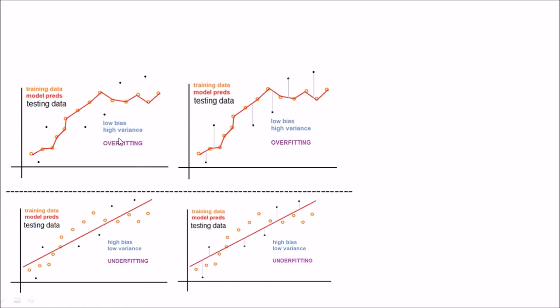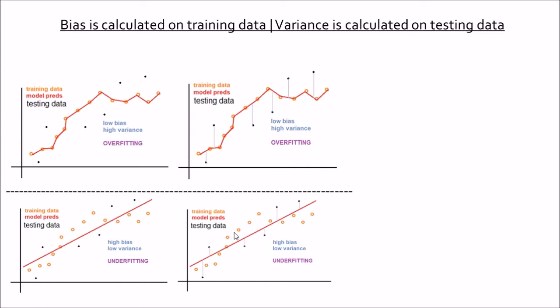And overfitting is where we try to learn everything there is in the data. A good fitting model is somewhere between these two states. There are two terminologies: bias and variance.